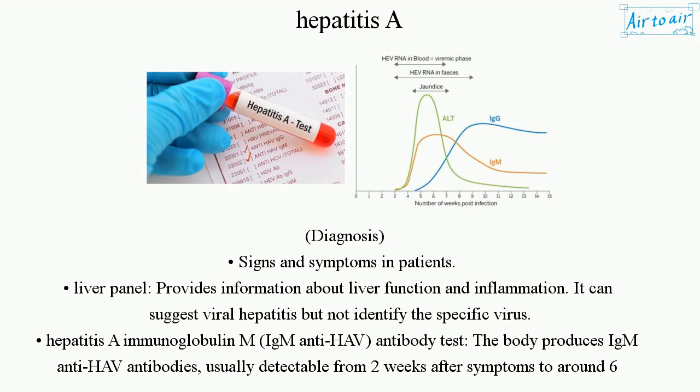The Hepatitis A immunoglobulin M (IgM anti-HAV) antibody test detects antibodies the body produces in response to infection. These are usually detectable from two weeks after symptoms appear to around six months later.